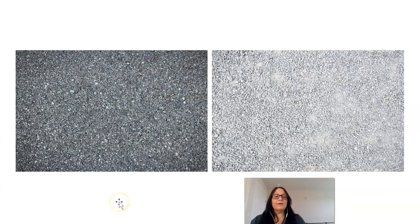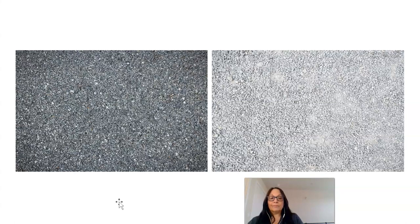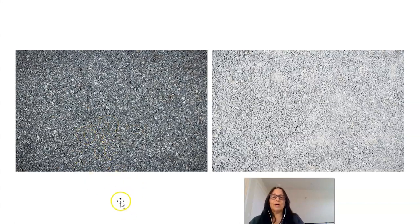Here we have another two surfaces. The sunlight is shining the same amount. The only difference is that one surface is dark and the other surface is pale. With what you've already learned, which side is warmer? I hear some really good answers. If you said this side, you are correct.